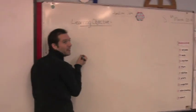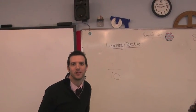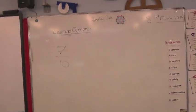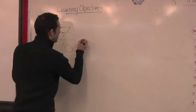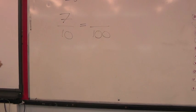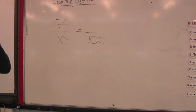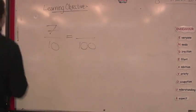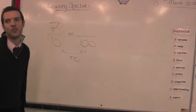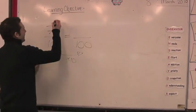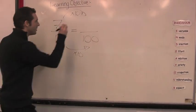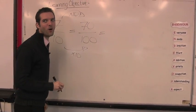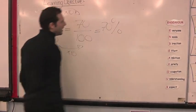Seven tenths. Can you see that? We're going to make it into a percentage, yeah? Percentage means out of 100. I'm going to write it out of 100. How do I get from 10 to 100? Multiply by 10. Whatever I do to the bottom, I've got to do to the top. So I've got to times that by 10 as well. Makes it 70 out of 100. We know out of 100 is the same as per cent — 70 per cent.